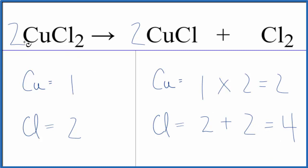Let's put a two in front of the copper chloride. One times two, that'll give us two of those, those are balanced. And then two times two, that gives us four. We've balanced the chlorine atoms, and we're done. This equation's balanced.